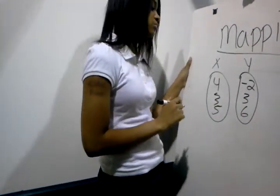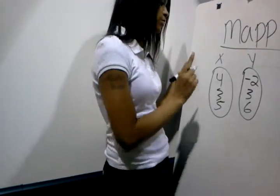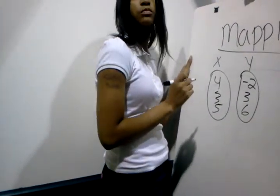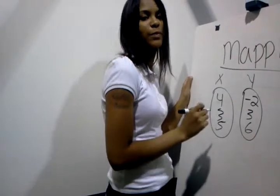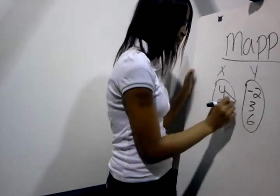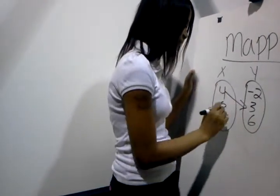And then that's when you draw arrows to see which is the ordered pair.